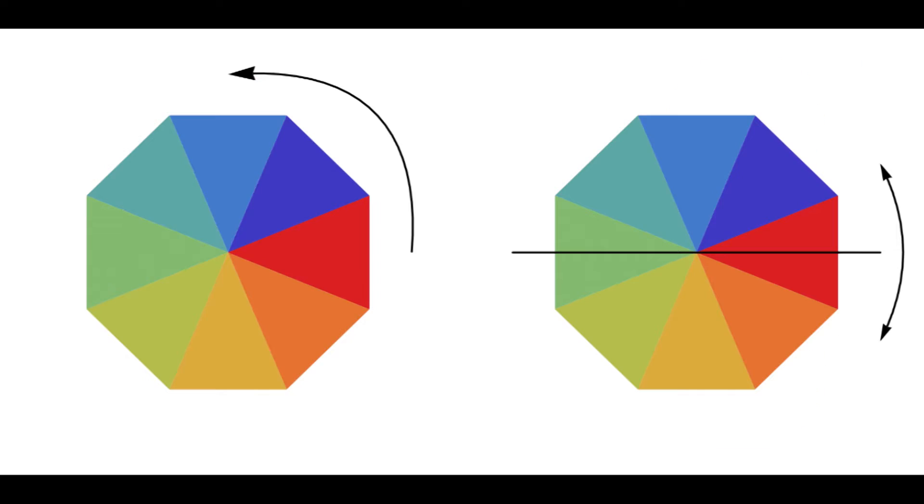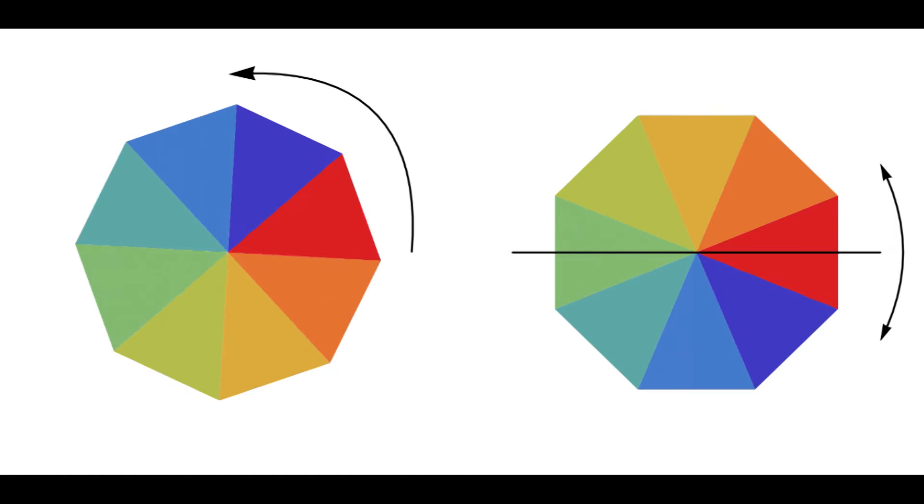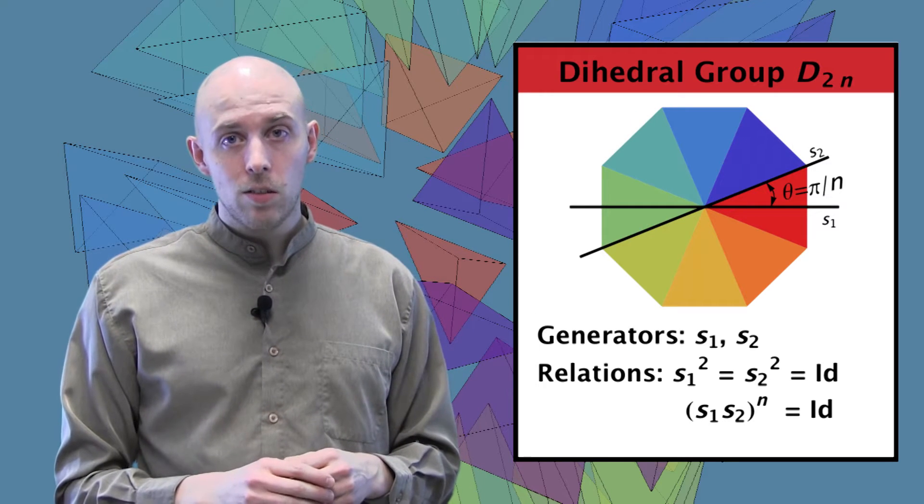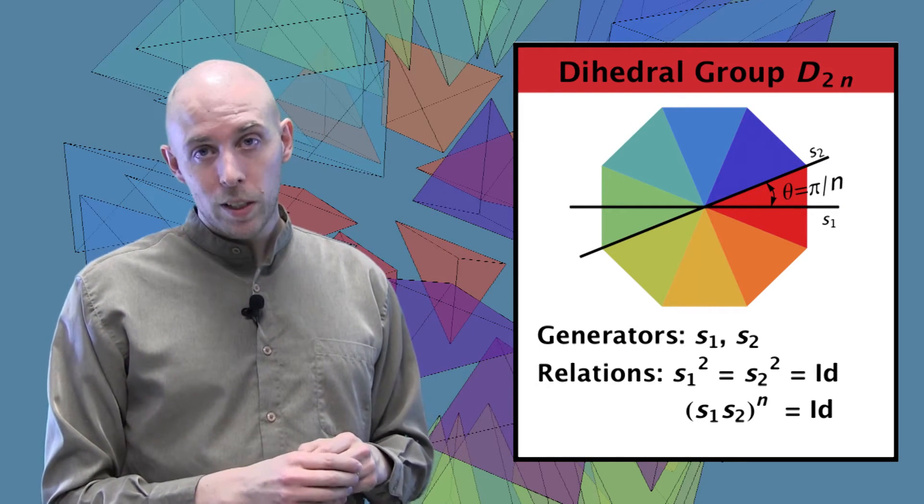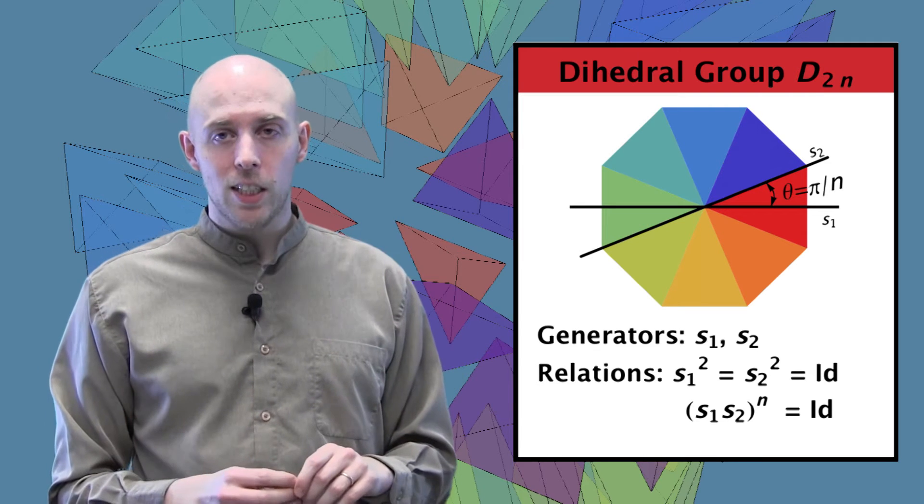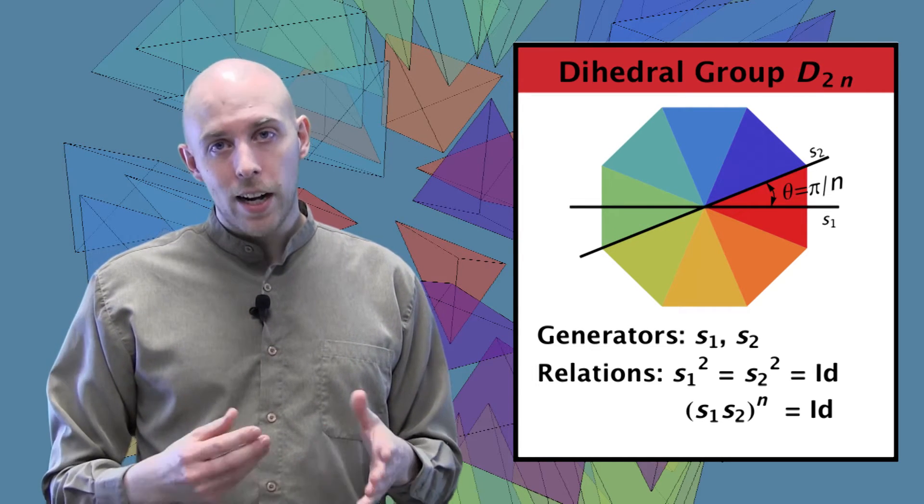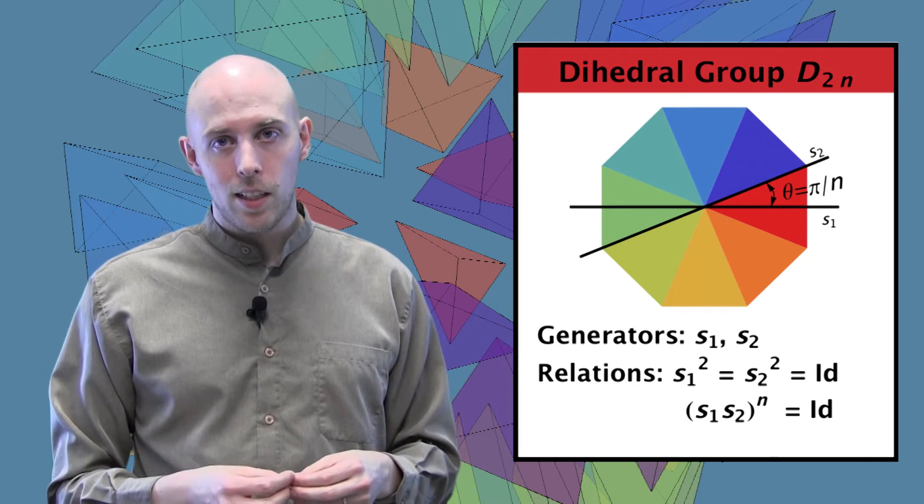In particular, the dihedral group can be generated by a rotation and a reflection. Now the reflection fits right at home. But the rotation, where does that fit? So a single rotation corresponds to a sequence of two flips, as you can see right here. So the dihedral group can be understood as a reflection group where the two mirrors are placed at an angle of π/n to each other. And that corresponds to a braid relation of (S1, S2)^n is equal to the identity.